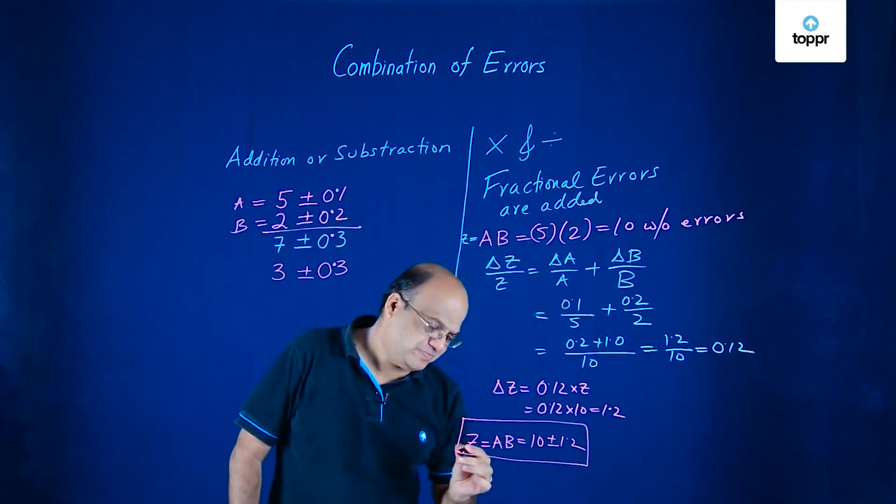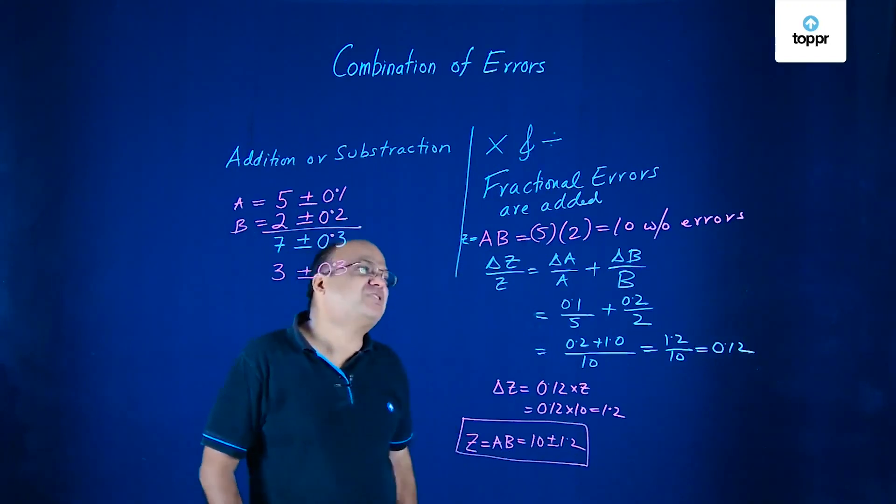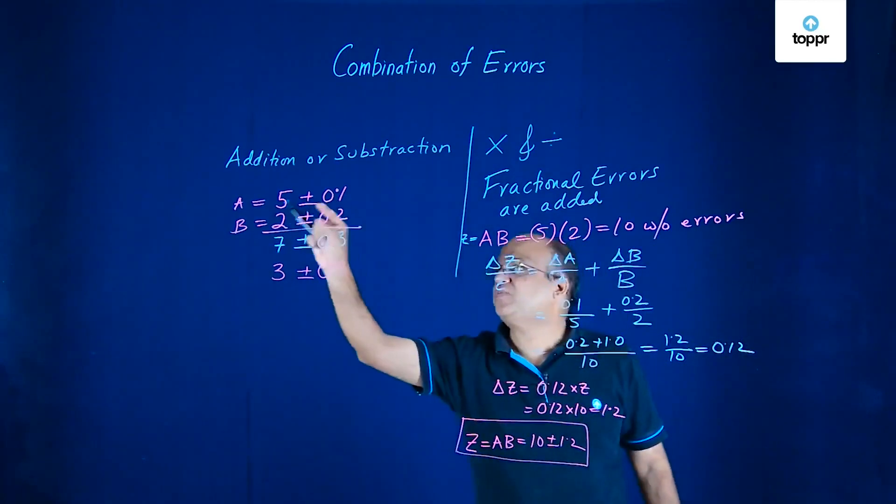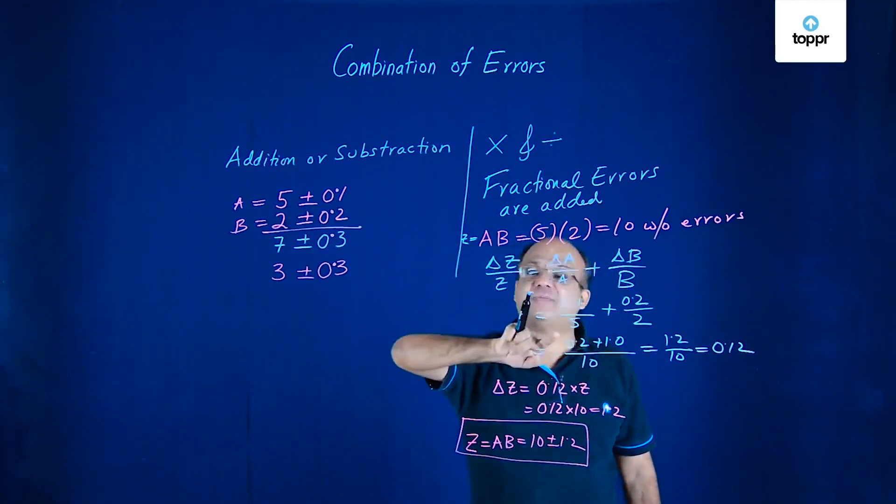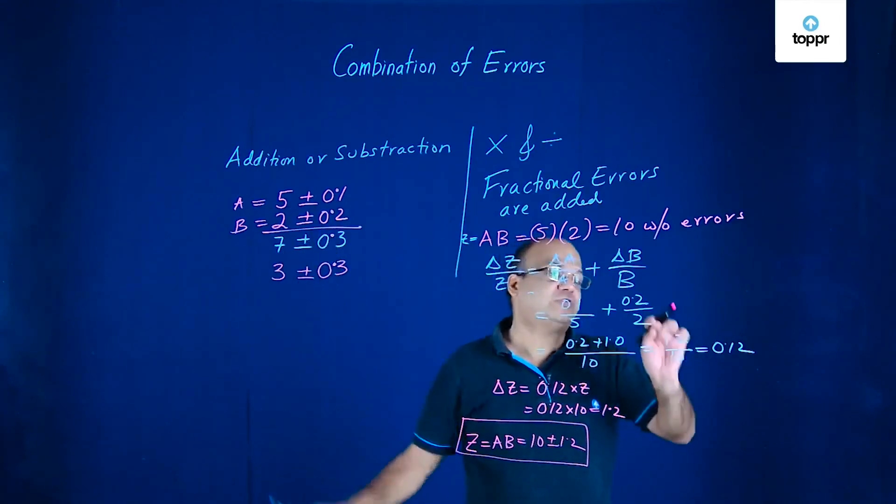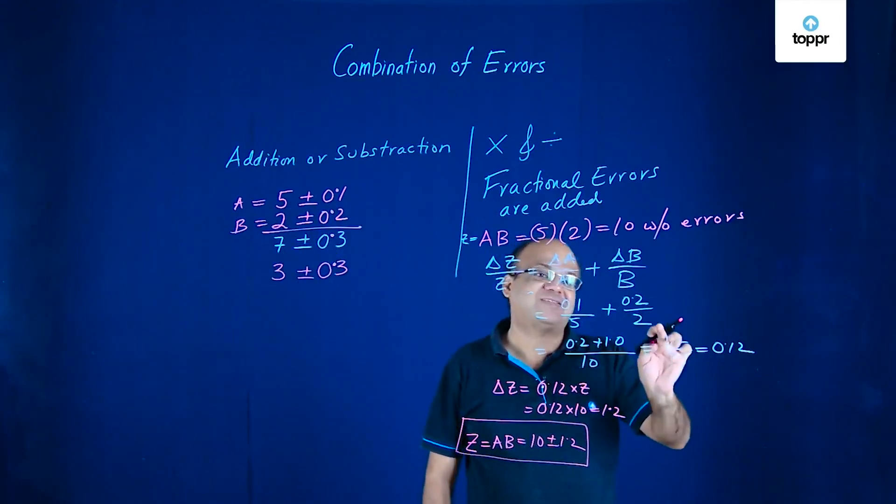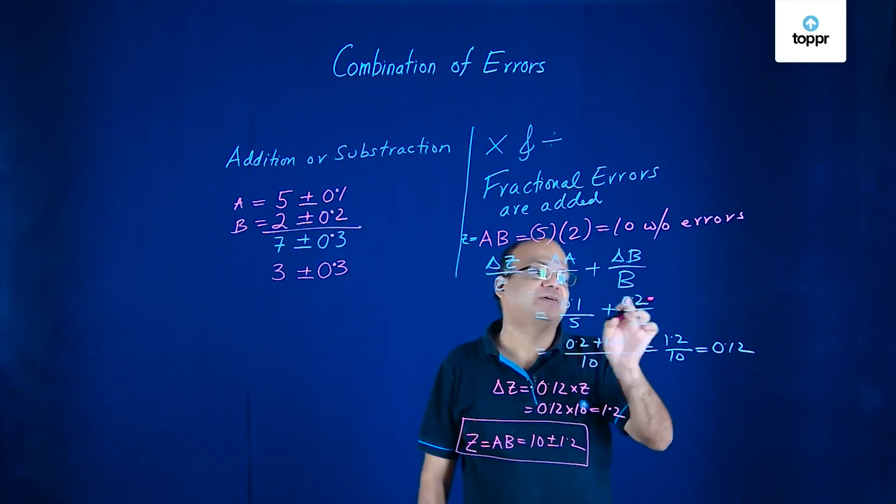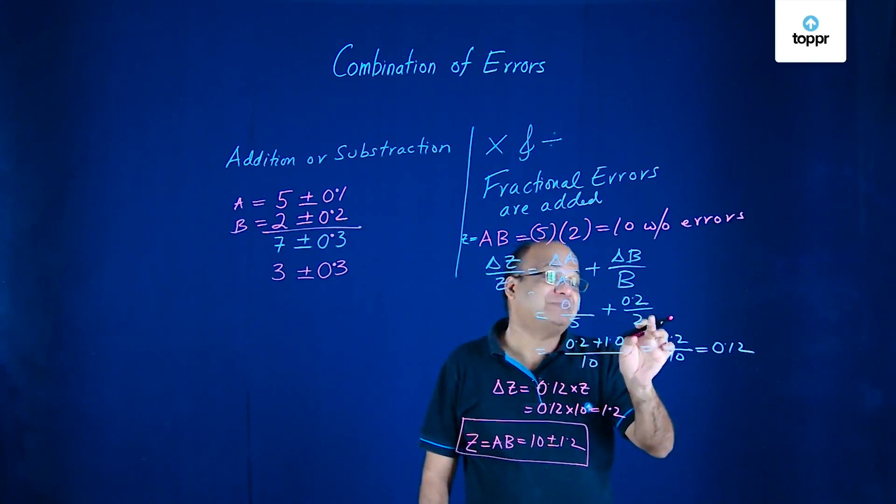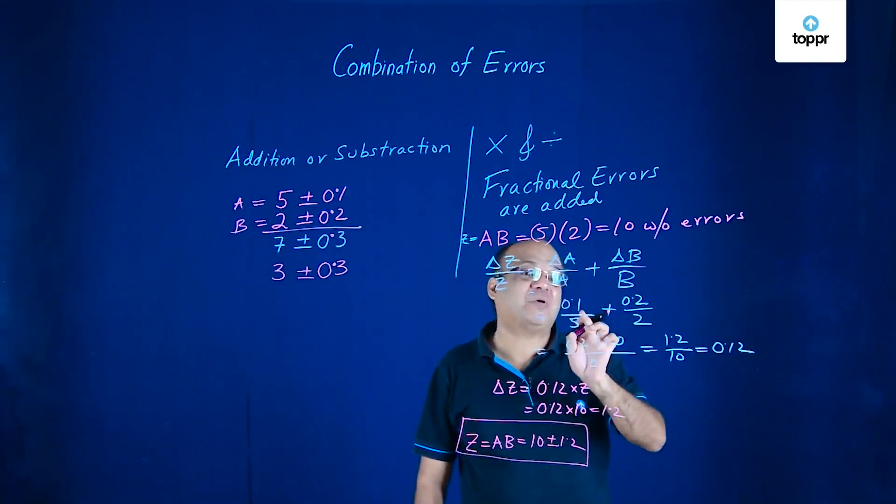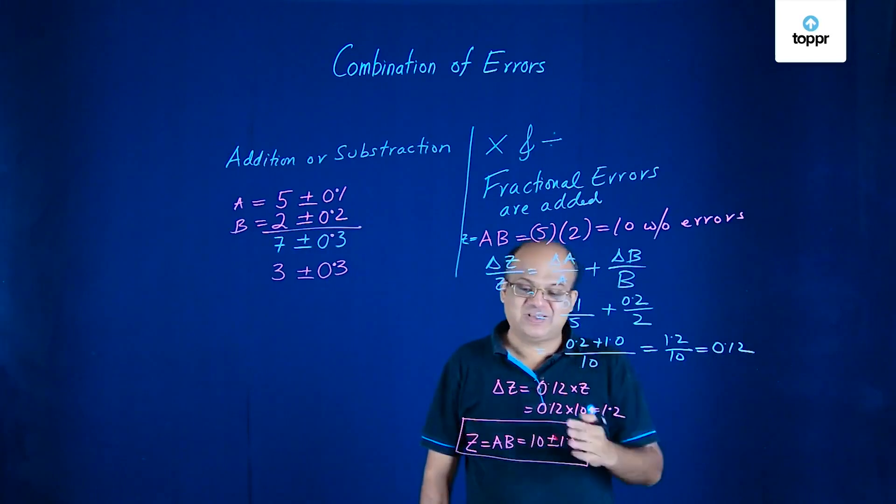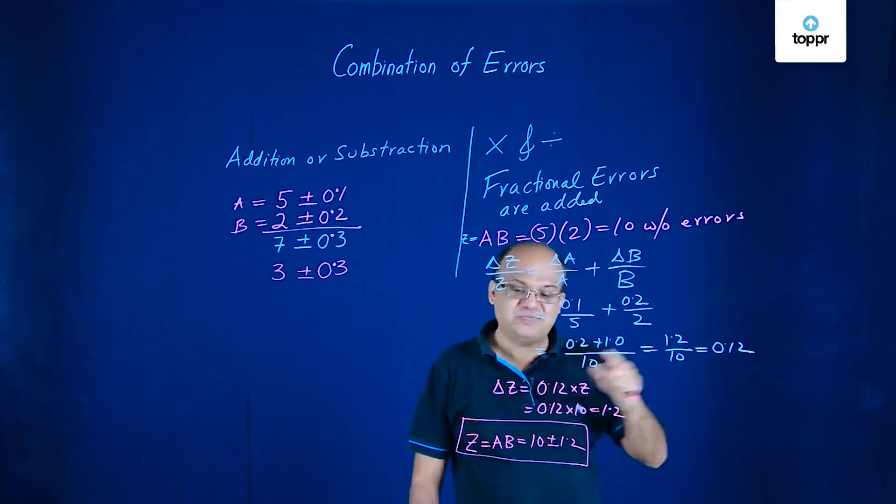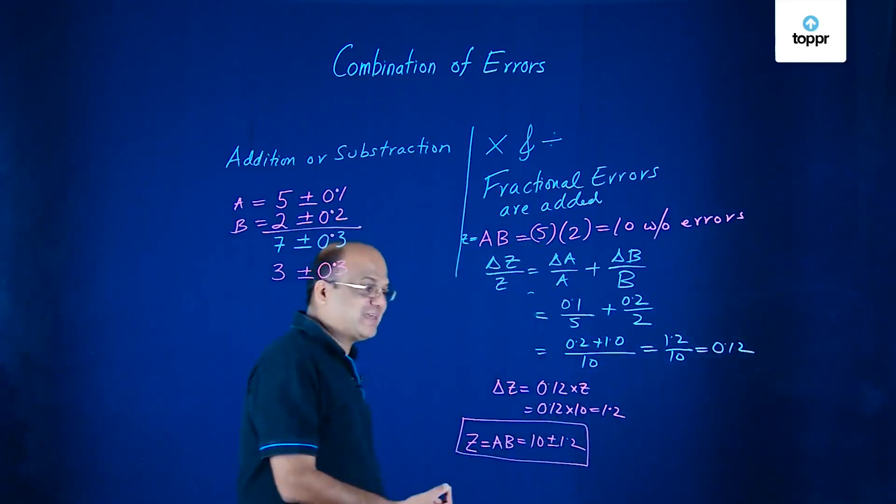So remember here fractional errors are added not absolute errors. So here it was 0.1 in 5 so 0.1 by 5. 0.2 in 2 so 0.2 by 2. This is 10. 0.2 by 2 will be how much? 0.1. And this is 0.02. So I get 0.12. So we get delta Z by Z as 0.12. So delta Z is 1.2.